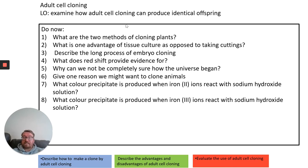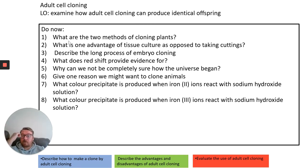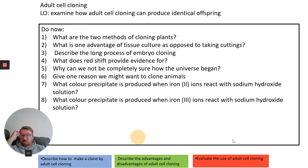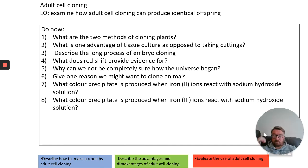Adult cell cloning is a technique for cloning animals. You have a do now as always — please could you pause the video now and complete the do now. Okay, on to the answers.